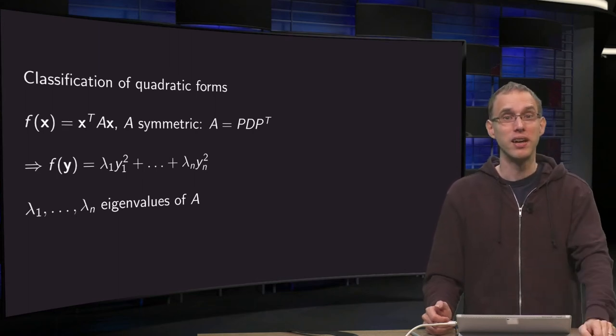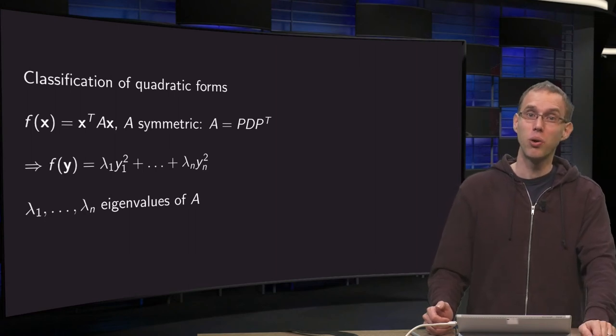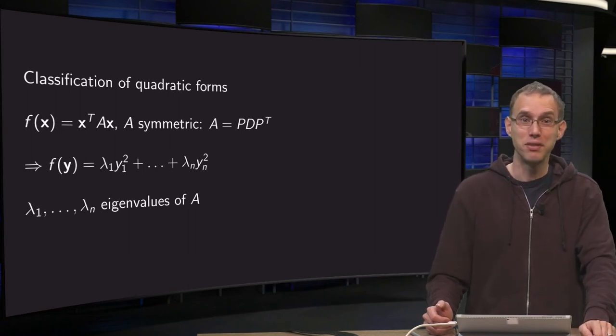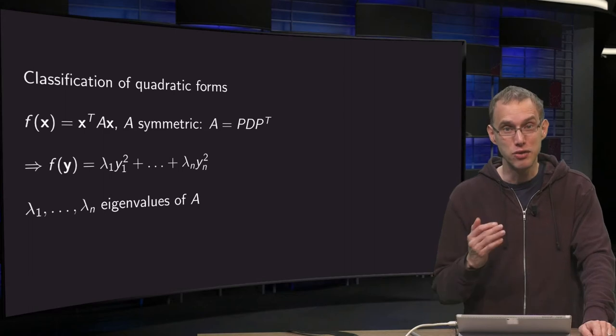And that is why quadratic forms are actually classified according to the sign of their eigenvalues, as you will learn in this video.